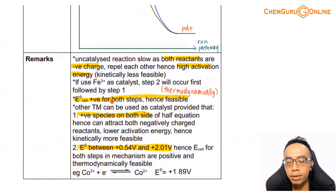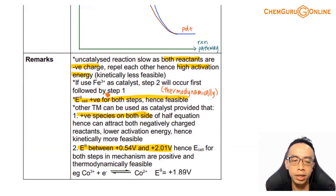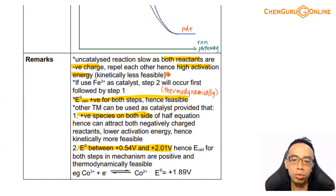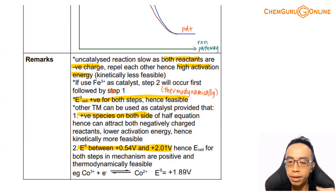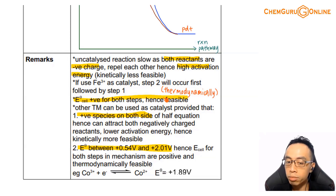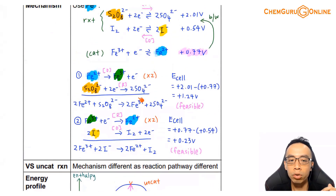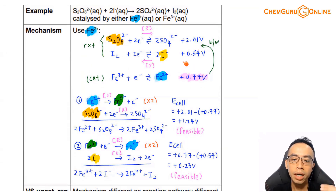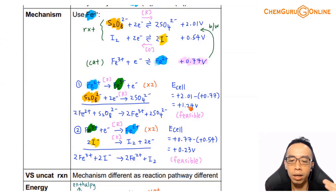Variable oxidation state is an important property that allows transition elements to function as homogeneous catalysts. Under remarks: the uncatalyzed reaction is slow because both reactants are negatively charged, giving high activation energy and making it kinetically not feasible, though thermodynamically feasible. If using Fe³⁺ as the catalyst instead of Fe²⁺, Steps 1 and 2 swap, but Fe³⁺ is regenerated at the end. Importantly, we must show that both steps are feasible — the E-cell for both steps must be positive — which is why the E-value of the catalyst must lie between the E-values for the reactants.